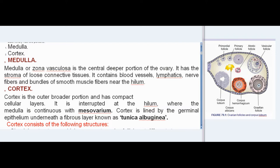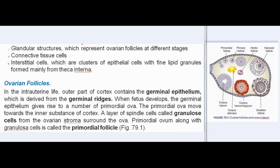Cortex is the outer broader portion and has compact cellular layers. It is interrupted at the hilum, where the medulla is continuous with mesovarium. Cortex is lined by the germinal epithelium underneath a fibrous layer known as tunica albuginea. Cortex consists of glandular structures representing ovarian follicles at different stages, connective tissue cells, and interstitial cells, which are clusters of epithelial cells with fine lipid granules formed mainly from theca interna.